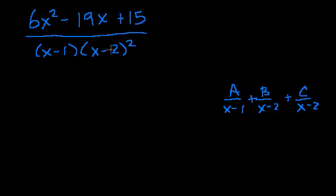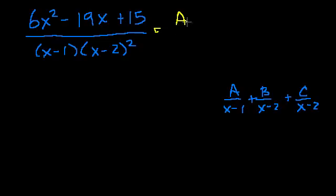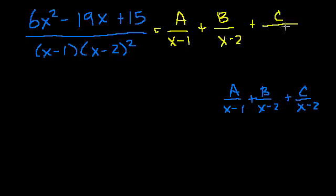You might want to square it and view it as a second-degree term like the previous example, but then you wouldn't have fully decomposed the problem. The correct answer is to decompose it as a/(x-1) + b/(x-2) + c/(x-2)². Instead of having c/(x-2), you have c/(x-2)².